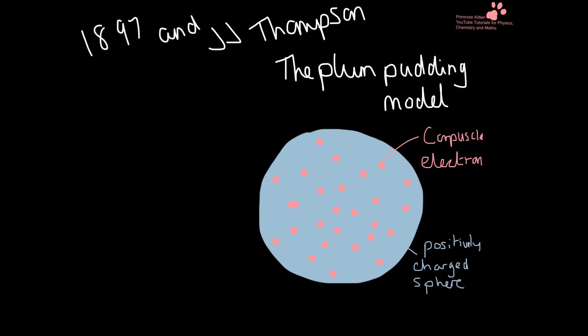In 1897, J.J. Thomson did a number of experiments where he found that there were bits inside the atom. He showed that these bits had negative charge and he called these corpuscles — we now know these as electrons. He described the corpuscles as evenly distributed in a large positively charged sphere, which is what we commonly know today as the plum pudding model.